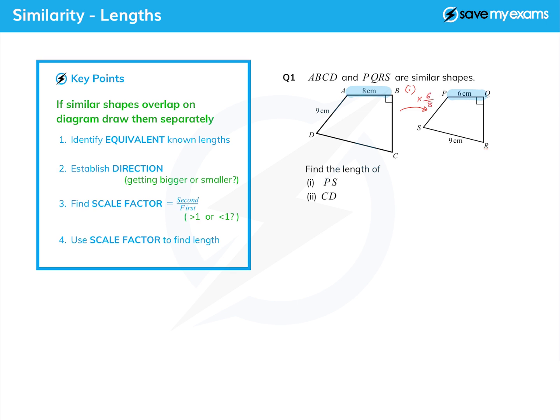You could simplify that if you want to but you don't really need to. Now we can just say PS is the equivalent side on the other shape, that's AD times six over eight. So that's nine times six over eight, which is of course, if you put it in your calculator, three quarters of nine, 6.75, and we're in centimeters.